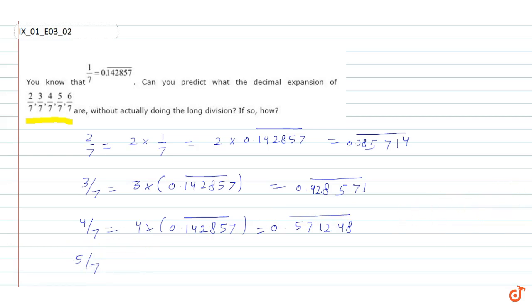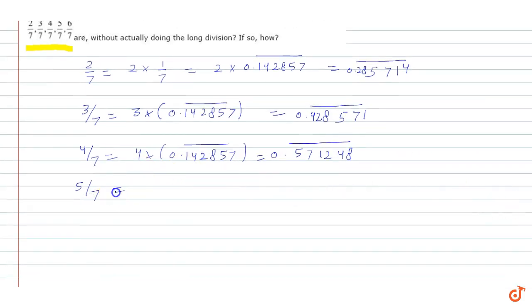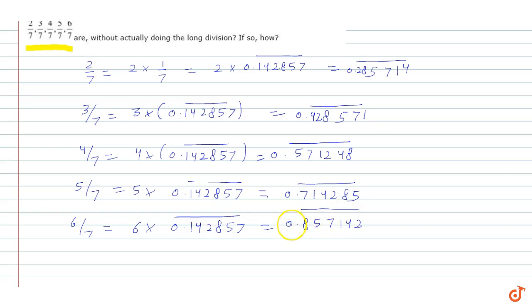5/7 is equal to 0.714285 and 6/7 is equal to 0.857142. This is repeated because 1/7 is repeated, so this is the answer for question number 2.